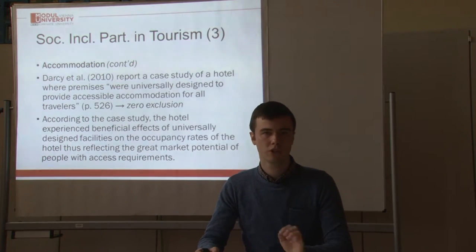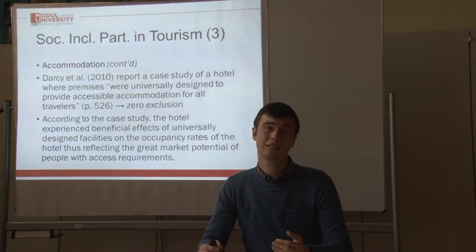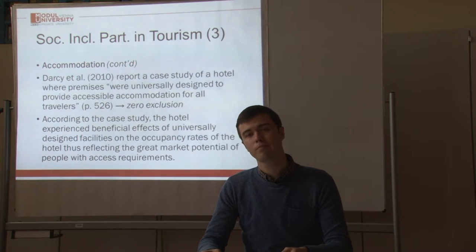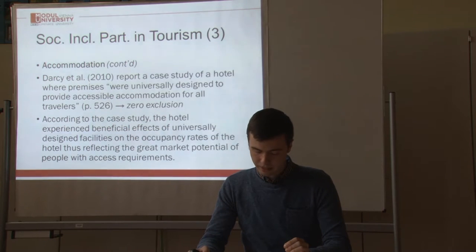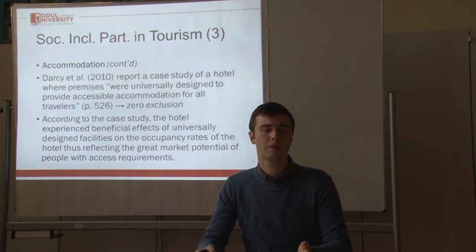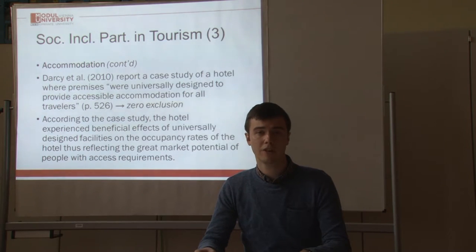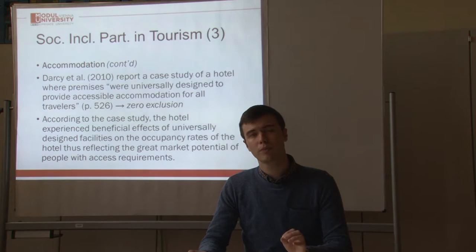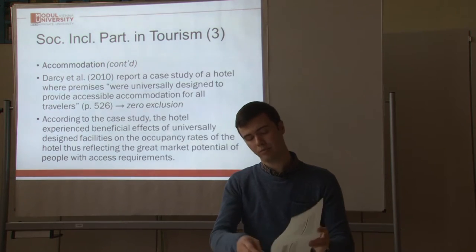They started to target people with disabilities as a target group for their property, but this can be problematic. Many people with disabilities have probably much more in common with people without disabilities than with other people with disabilities, so grouping them together is often problematic. This is seen in museums, for example, where studies report that people with visual impairment are often treated as a very homogeneous group, when in fact they have diverse interests that may align more with people without visual impairment than with other visually impaired individuals.